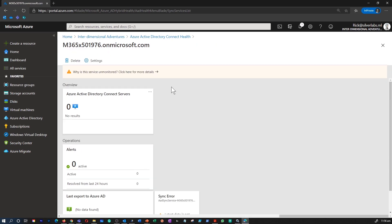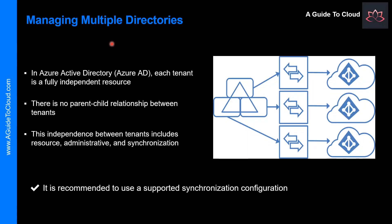Azure AD Connect Health works by installing an agent on each of your on-premises sync servers. In Azure Active Directory, each tenant is a fully independent resource — a peer that is logically independent from other tenants that you manage. There is no parent-child relationship between tenants. The independence between tenants includes resource independence, administrative independence, and synchronization independence.